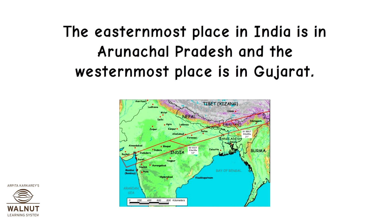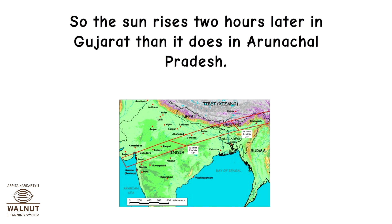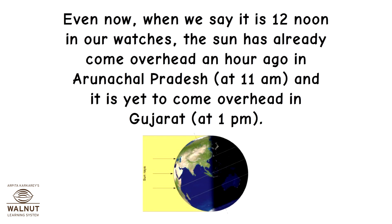The easternmost place in India is in Arunachal Pradesh and the westernmost place is in Gujarat. If you actually look at the local time in these two places, the difference is almost 2 hours. So the sun rises 2 hours later in Gujarat than it does in Arunachal Pradesh. Even now, when we say it is 12 noon on our watches, the sun has already come overhead an hour ago in Arunachal Pradesh at 11am, and it is yet to come overhead in Gujarat at 1pm.